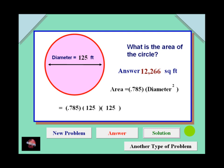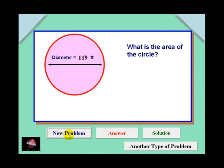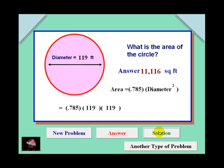By clicking on the new problem button, you'll get a new set of numbers to calculate. You can do this as many times as you want until you get the idea on how to solve the problem — in this case, the area of a circle.